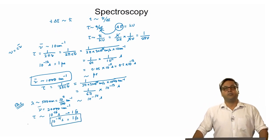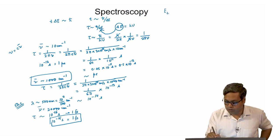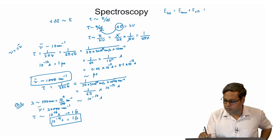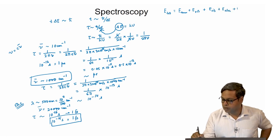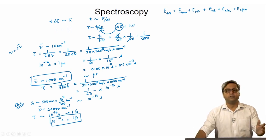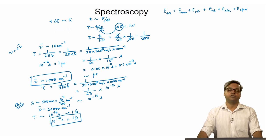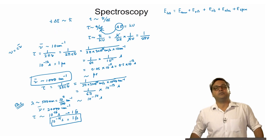The total energy of a molecule can be written as E total equals E translational plus E rotational plus E vibrational plus E electronic plus E spin. So the total energy of a molecule is a sum of different modes of molecular motion. This assumes the different modes of motion of a molecule are independent.